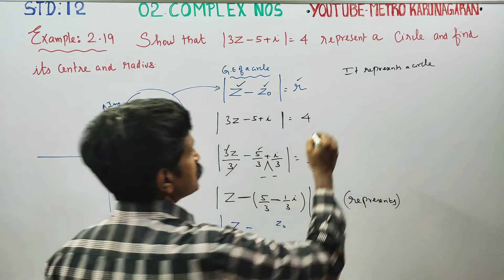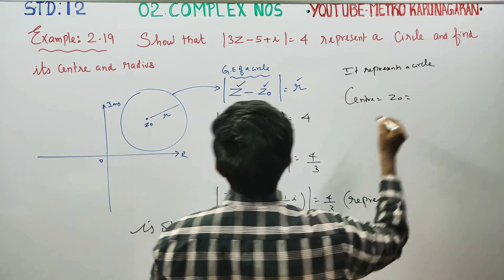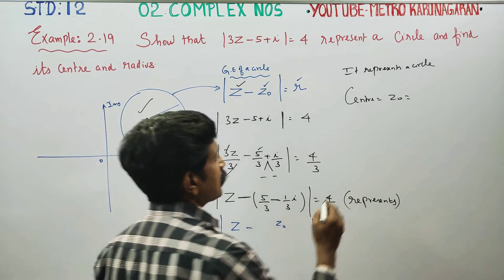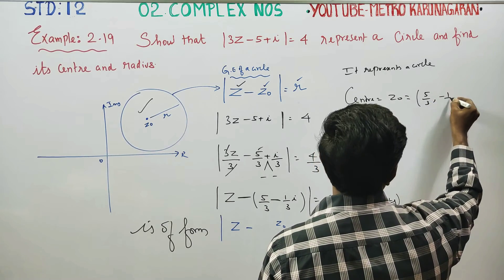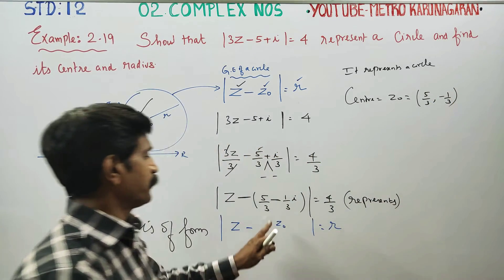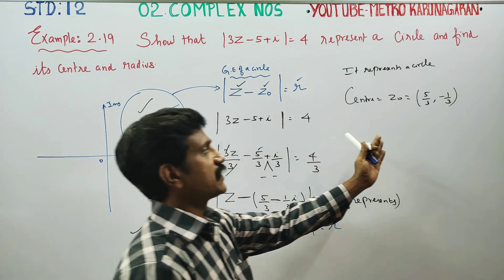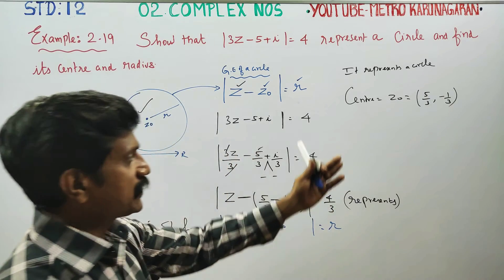What is your center? My center is Z0. Z0 is the center. Z0 is 5/3 minus i/3. This is my point. I will be ordered pair, complex number 5/3 minus 1/3 i is the center.